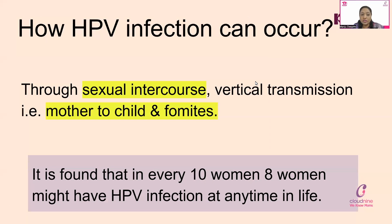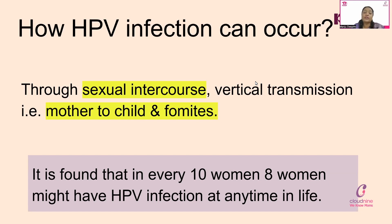HPV infection occurs through sexual transmission, by intercourse, from mother to child, and by fomites. In every 10 women, 8 may have an HPV infection in their lifetime. Please understand — infection does not mean cancer. A person can be HPV infected, which is the first stage, and may or may not develop into cervical cancer. If your body's immunity is good, or you are vaccinated, you may not progress to worse stages.